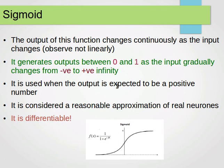It's used when the output is expected to be a positive number, between 0 and 1. It's considered a reasonable approximation of the real neurons, so it's widely believed that this is probably how the real neural network works, although it's an approximation. And it's differentiable. We can compute the derivative, and that will help us very nicely in understanding and implementing the multilayer perceptron and the backpropagation training algorithm.